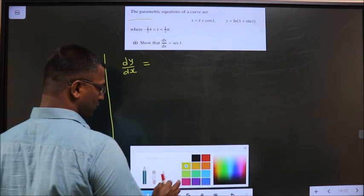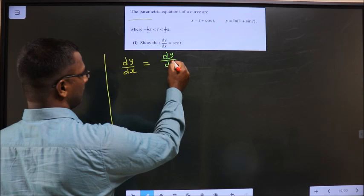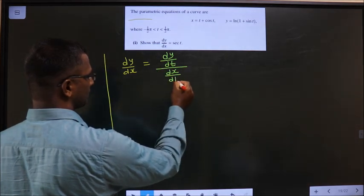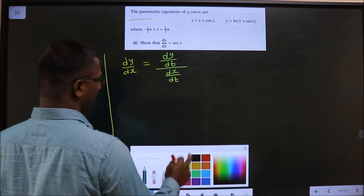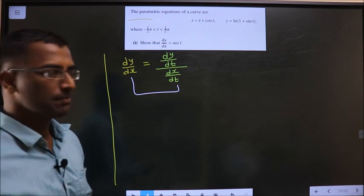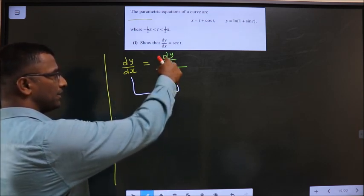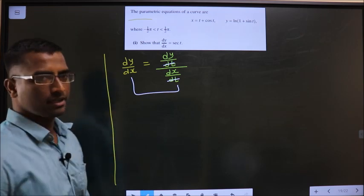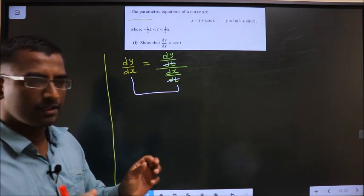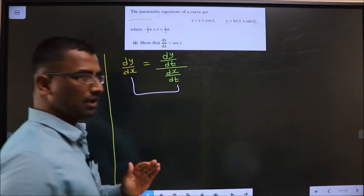Write dy by dx to be dy by dt by dx by dt. And I am saying these two are equal. And how come they are equal means I can cancel dt and dt. Then I will get dy by dx back. What we did is I just brought dt below dy and also dx. Clear?